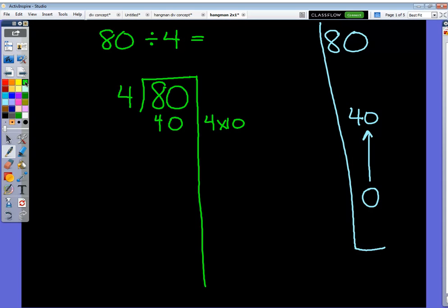Now am I all the way there? No. How much further do I have to go? Let's subtract. 80 minus 40 equals 40. Now I can go the other 40 very easily just by doing 4 times 10 yet again. 4 times 10 equals 40. So 10 more 4's gets me the rest of the way there. There's no difference here. 40 minus 40 equals 0. So now I've gone all the way to 80.